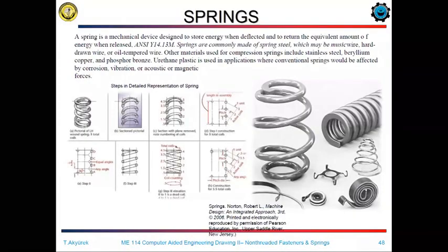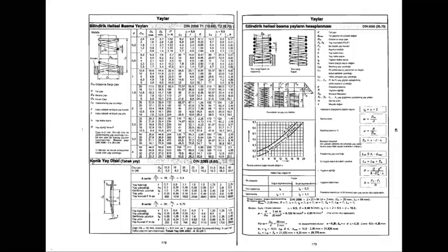Our next machine element is springs. Springs are mostly used as mechanical energy storage in applications. They are mostly produced from spring steels. The most frequently used springs are helical springs, which are wound on a shaft. The wire diameter and the distance between the windings determine the main characteristics of the spring constant.